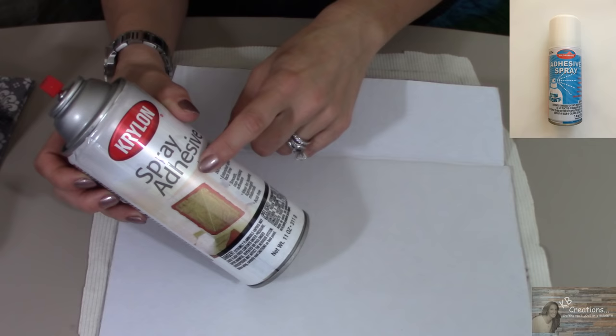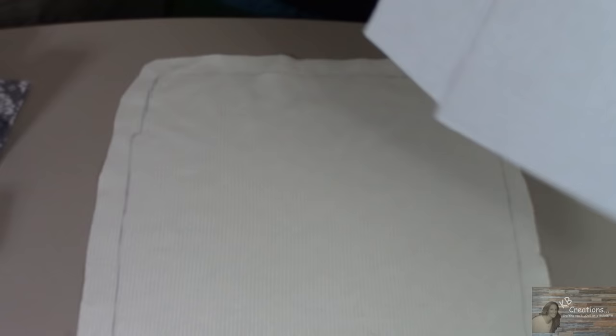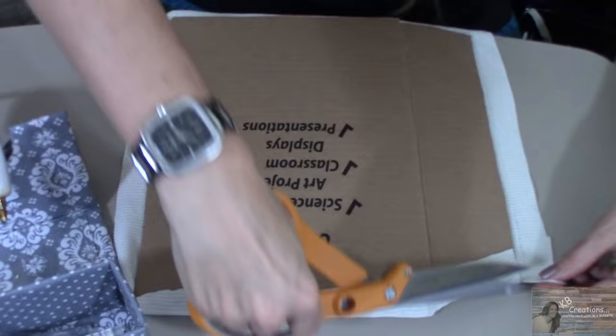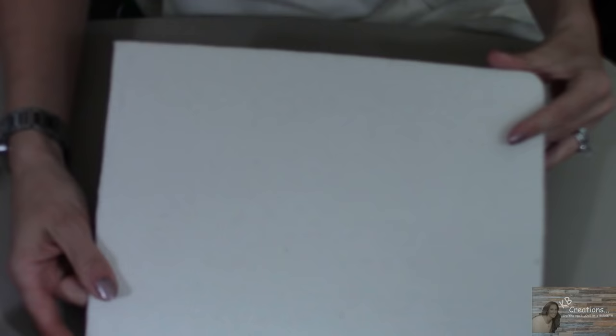I've sprayed my cardboard. Now I'm going to flip it over and place it on my fabric. And I'm going to fold back my edges of the fabric. My lid is covered.